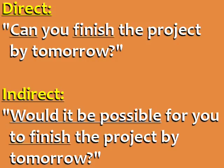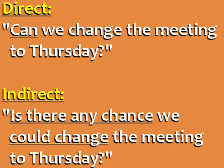Direct: 'Can you finish the project by tomorrow?' Indirect: 'Would it be possible for you to finish the project by tomorrow?' For questions with the word 'can,' we use 'would it be possible' in the indirect question. Also, we say 'to finish' instead of 'finish.' Direct: 'Can we change the meeting to Thursday?' Indirect: 'Is there any chance we could change the meeting to Thursday?' 'Is there any chance' is another way to ask an indirect question when the direct question begins with 'can.' We also use the word 'could' before 'change' in the indirect question.